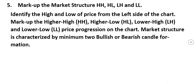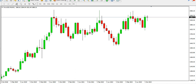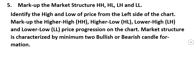Today we'll be marking up the higher high, higher low, lower high, and lower low on the screen. We're going to the chart now — it's a gold chart on the monthly time frame. You identify the high and low of price from the left side of the charts, then mark up the higher high, higher low, lower high, and lower low price progression, because market structure is characterized by a minimum of two bullish or bearish candles for formation.